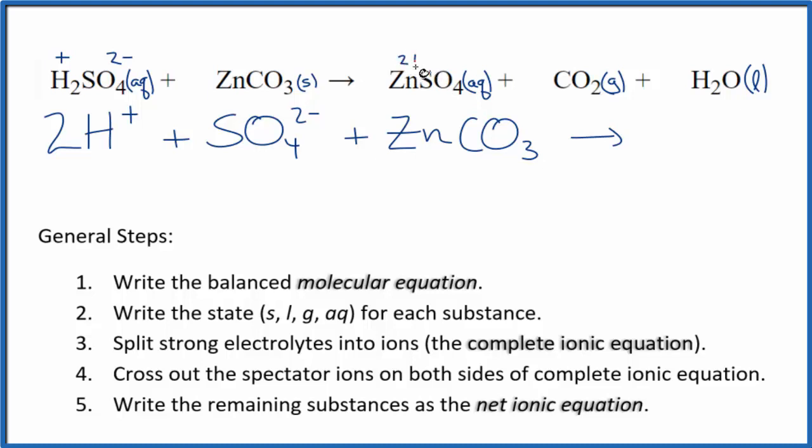In the products, zinc is always going to be 2 plus, and then we said the sulfate ion, 2 minus. So we'll have the zinc ion, Zn2 plus, and then we'll have that sulfate ion again, SO4, 2 minus.